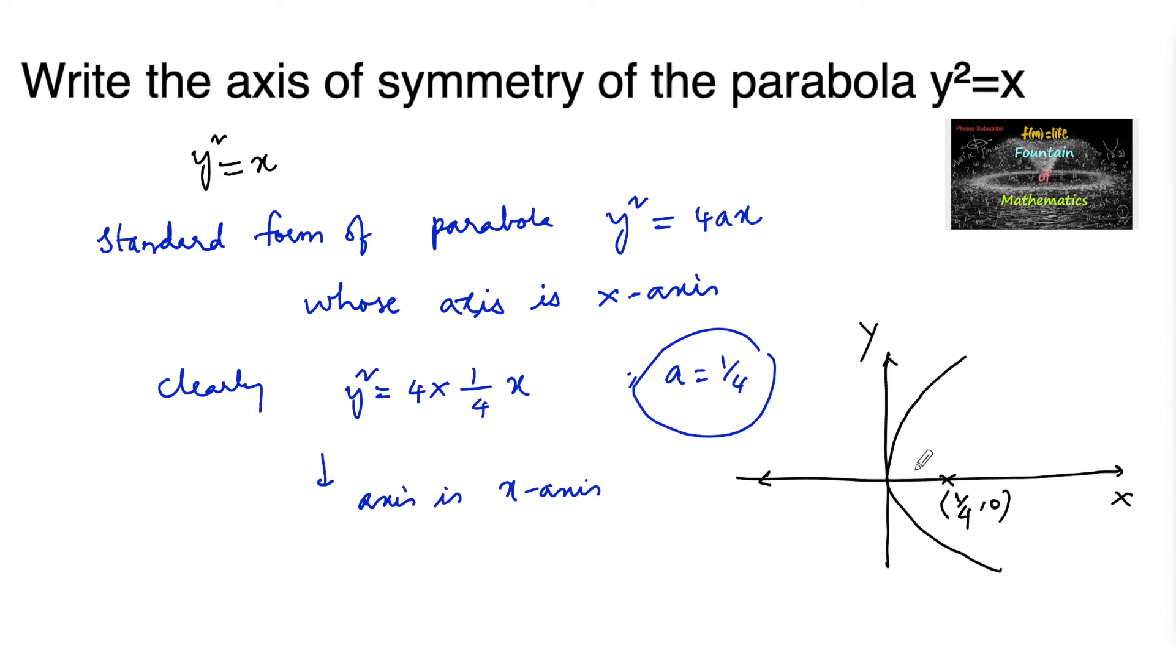So clearly we can say that the x-axis is the axis of symmetry. We can consider the axis of symmetry is the x-axis.